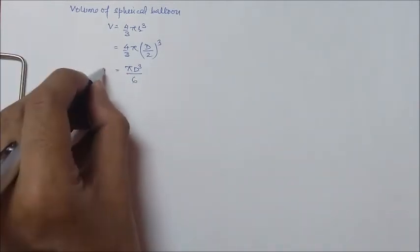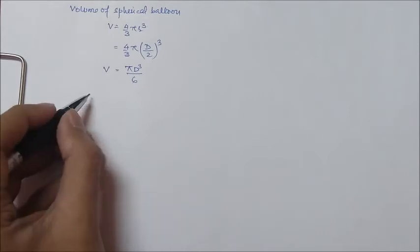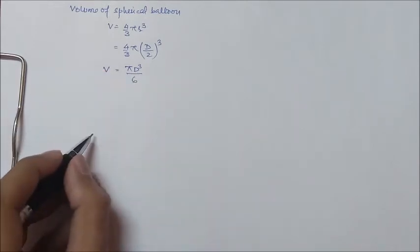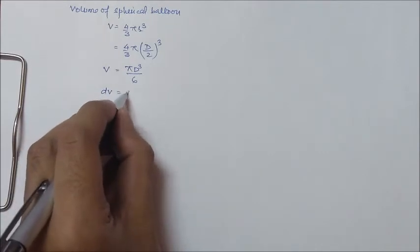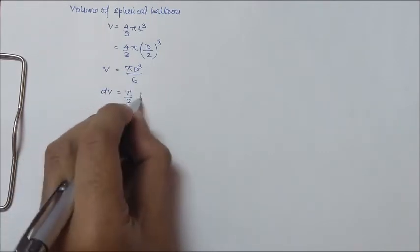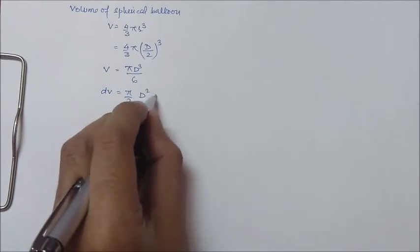Now we will differentiate this volume with respect to diameter. So dV is equal to pi by 2 d square dd.